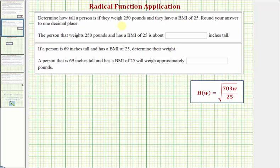Determine how tall a person is if they weigh 250 pounds and they have a BMI of 25, rounding to one decimal place. We're told the weight W is equal to 250 pounds, and therefore to find their height if they have a BMI of 25, we need to find the function value H of 250.